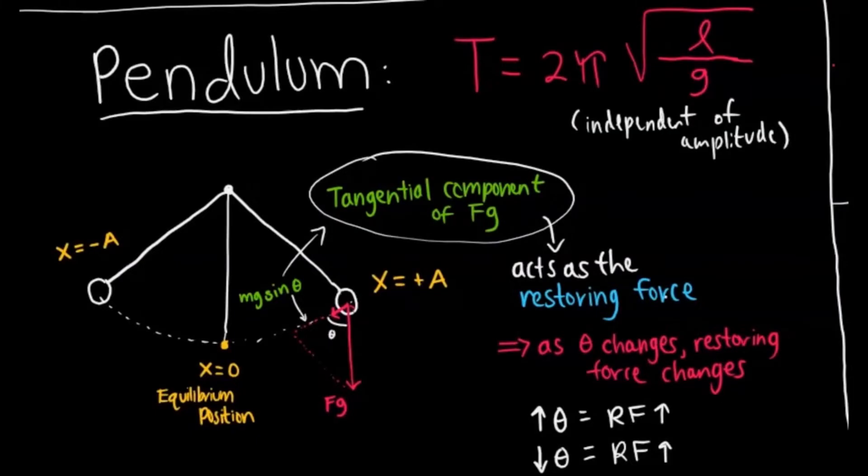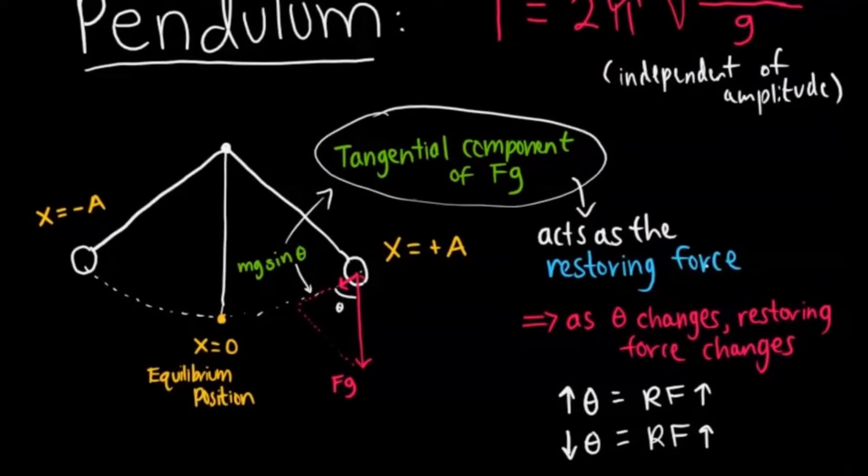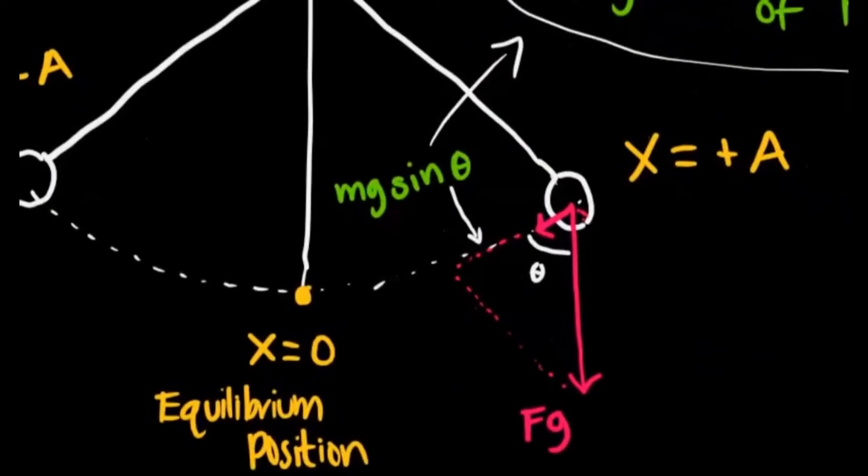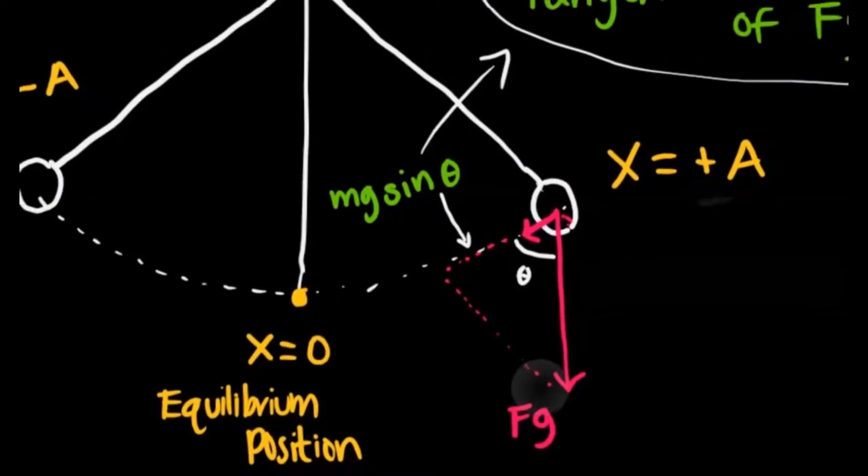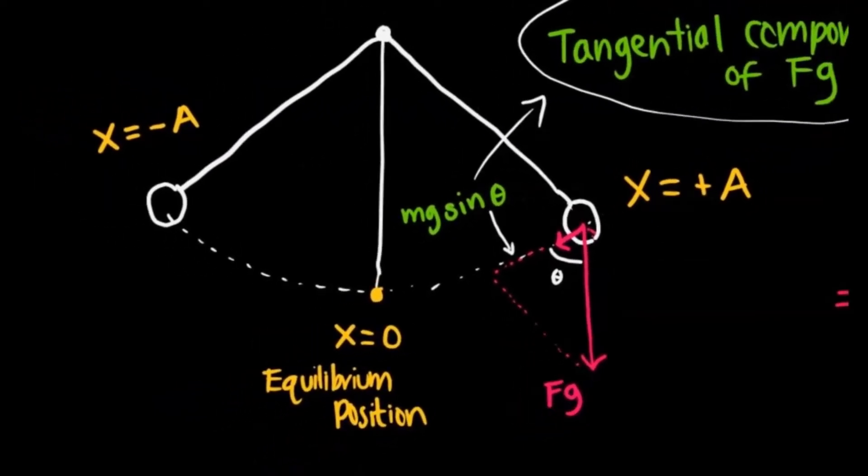Something to know about the equation is that it is independent of the amplitude. So if you zoom in on this ball, we can see that the restoring force is the tangential component of Fg, and this is the force right here. You can see that mg sin θ is what gives you that tangential force, and that's going to push that pendulum back towards its equilibrium position. It's not going to stop there because there's conservation of energy.